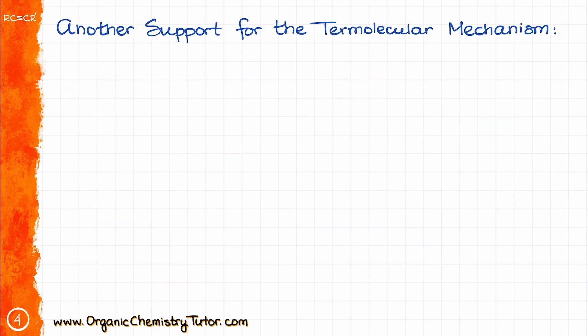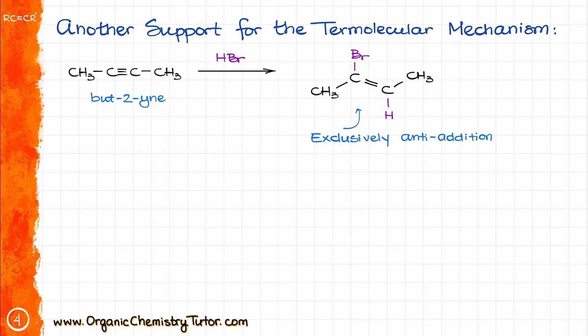There is also another experimental evidence that supports the termolecular mechanism for this reaction. So let's look at this reaction between the but-2-yne and HBr. The halfway product in this case is nearly exclusively a product of the anti-addition. If a carbocation would be involved in this reaction, then we would see an appreciable amount of the other product as well, since the reaction involving carbocations, they are not stereospecific. Yet, we are not seeing this here at all.